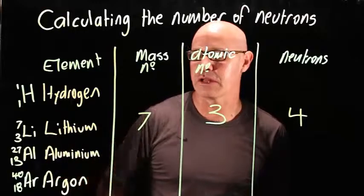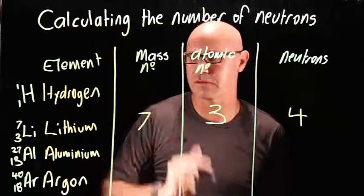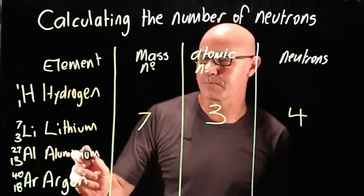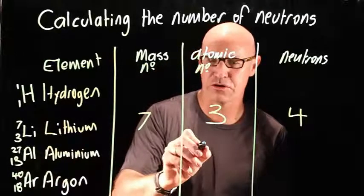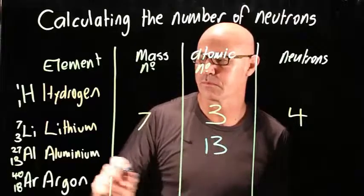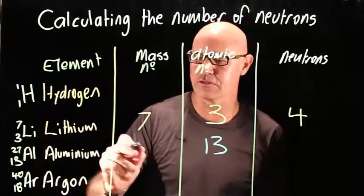Let's do aluminum next. I'm going to come back to hydrogen, it's a little bit different. Aluminum, what is the atomic number? The smaller number of the two, it's 13. The mass number is 27.